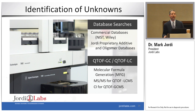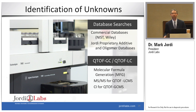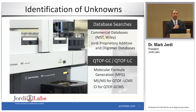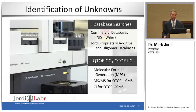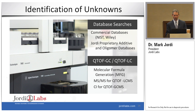Once we acquire this mass spec data, we will resort to using commercial databases for compound identification, but we also rely heavily on our own proprietary databases that we built up through tools like the PCDL — the Personal Compound Database and Library — that we build up with our own chemicals as we identify them, and we keep enriching that library over time through each analysis that we perform. We also use molecular formula generation as well as MS-MS analysis in order to further identify unknowns.